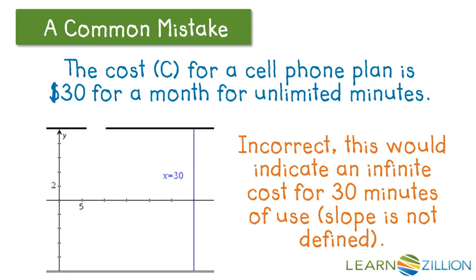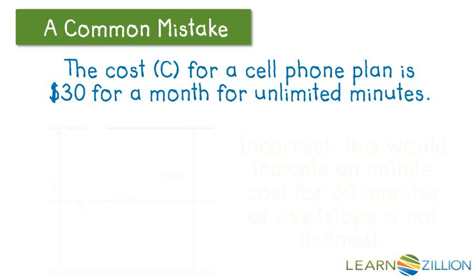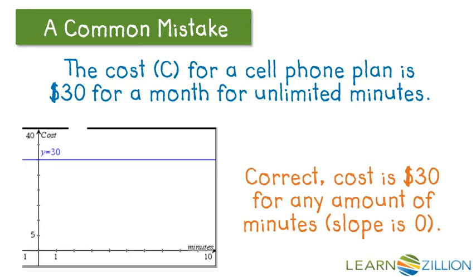our independent variable here is our minutes, and they're unlimited. So to say that we're locked in at 30 minutes isn't right and it doesn't make sense for a cost. So what this should look like is a horizontal line at the value y equals 30 because the cost is $30 for any amount of minutes that you use. This has a slope of 0, so watch out for this one. When you find a slope of 0, that's what it's going to look like, and that's the type of problem that we'll say will have something like that in it.